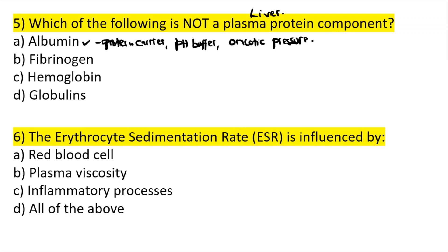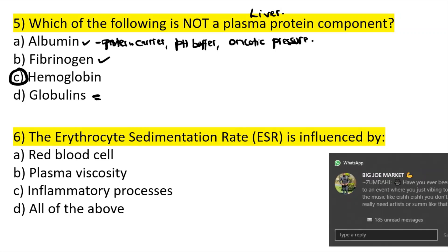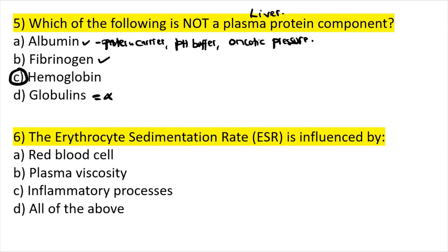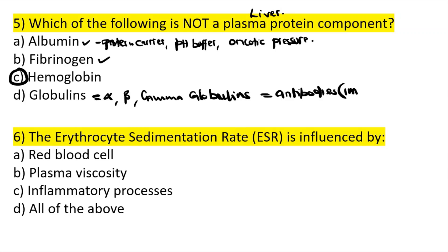Fibrinogen is a plasma protein used in clotting. Hemoglobin is not a plasma protein. Globulins are plasma proteins and there are three types: alpha globulins, beta globulins, and gamma globulins. Gamma globulins produce antibodies, which are known as immunoglobulins.